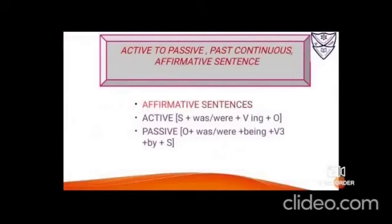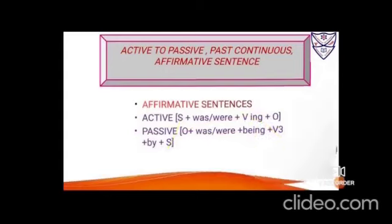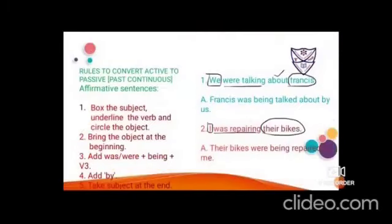Active to passive — past continuous tense, affirmative sentences. The active voice formula: Subject + was/were + verb(-ing) + object. For example: 'She was writing a letter.' In passive voice, the object is brought ahead, 'was'/'were' remain the same, -ing becomes 'being', and the verb comes in its third form, followed by the subject.